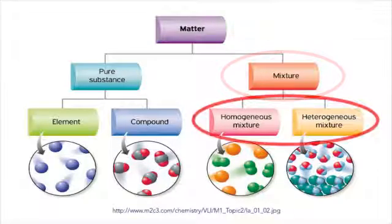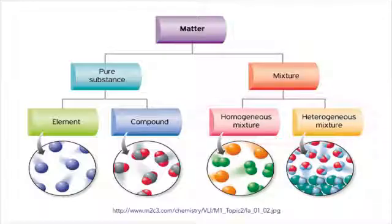Mixtures can be homogenous or heterogeneous. Alloys are homogenous mixtures because the composition appears to be uniform throughout. The metals in them are not chemically bound like in a compound, but held together by something called intermolecular forces.